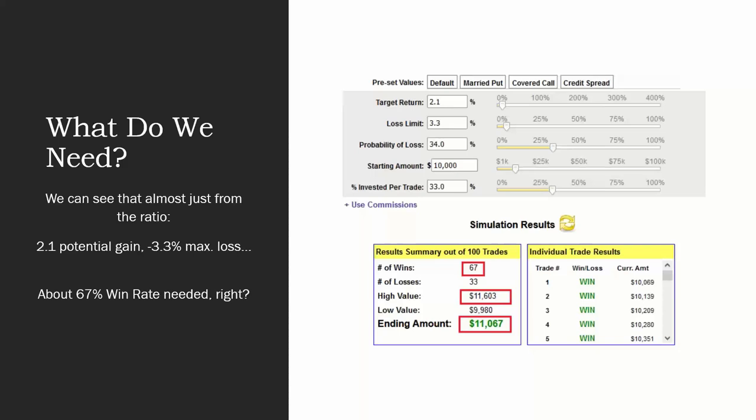Now, what do we need? We can almost see that from the numbers. If I'm making 2.1% when I'm right and losing the max loss of 3.3% when I'm wrong, we could just divide that out, and we see we need about a 67% win rate. Let's take a look at that. Use the same numbers, but change our probability of loss to 34%. It's going to be right 66%, 67% of the time. Same rough allocation. And here we see that over time, if I am right 67% of the time, that we can see about a 16% return over 100 trades. So if you're doing two trades per week, two weekly collars over the whole course of the year for 52 weeks, there's 100 trades with a win rate of 67%, and this win-loss ratio, you'd have a 16% return of the investment at the end of the year.